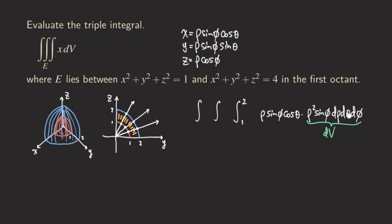For θ — the same angle as in polar coordinates — since we are in the first octant we project onto the xy-plane. θ starts from 0 and goes to the positive y-axis, which is π/2. So the limits for θ are 0 to π/2.